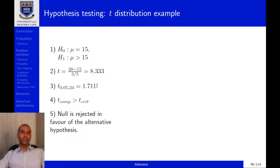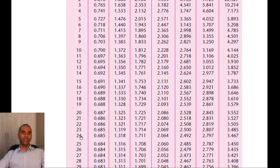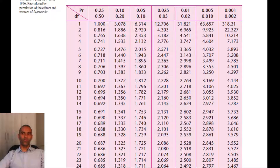Next, we look up the critical value in the t-distribution table. The note at the bottom of the table reminds us that the smaller probability in each column header is the area in one tail, and the larger probability is the area in both tails. Since we're dealing with a right-tailed test, we use the one-tail area. With 24 degrees of freedom (sample size 25 minus 1) and a significance level of 0.05, the critical value from the table is 1.711.